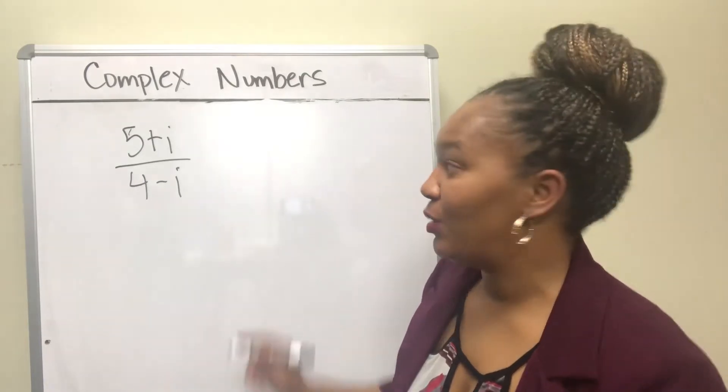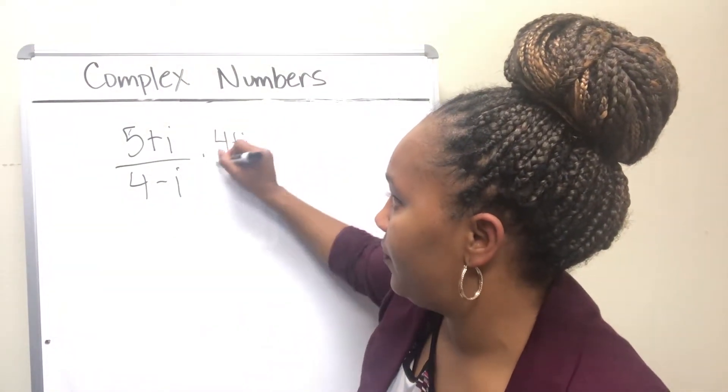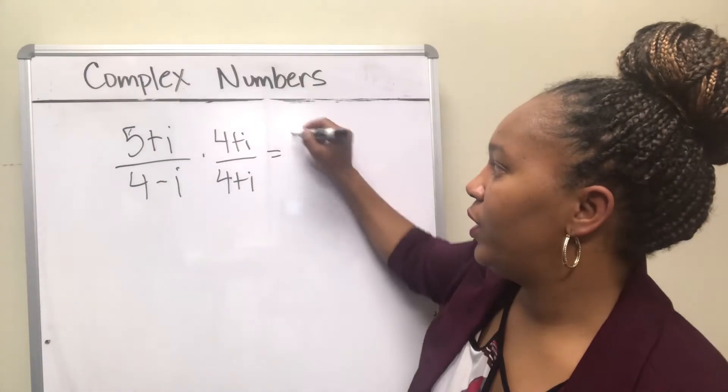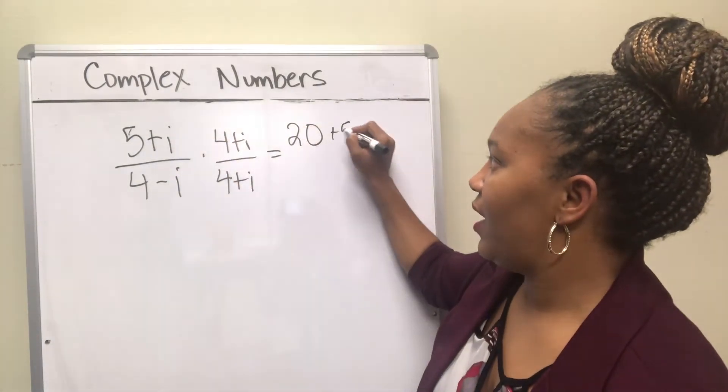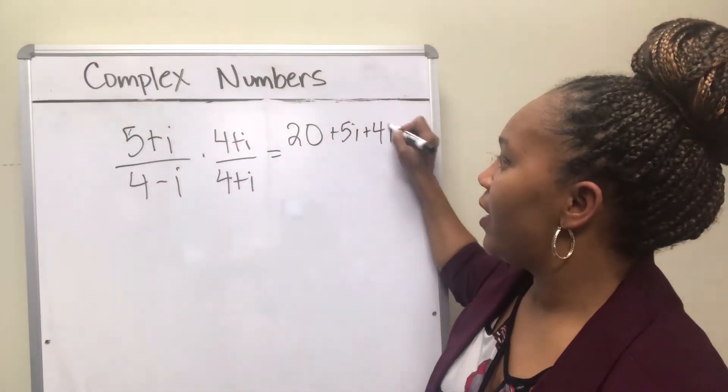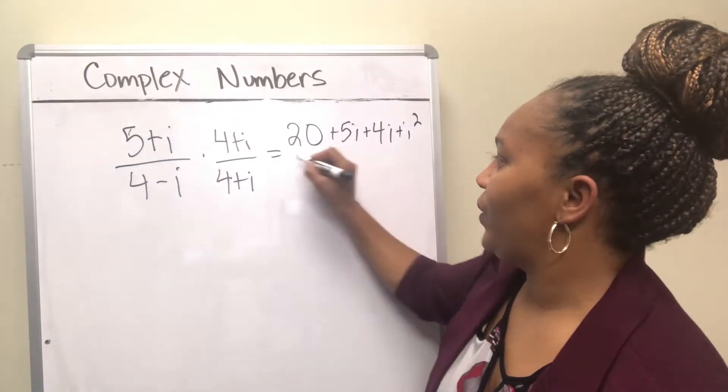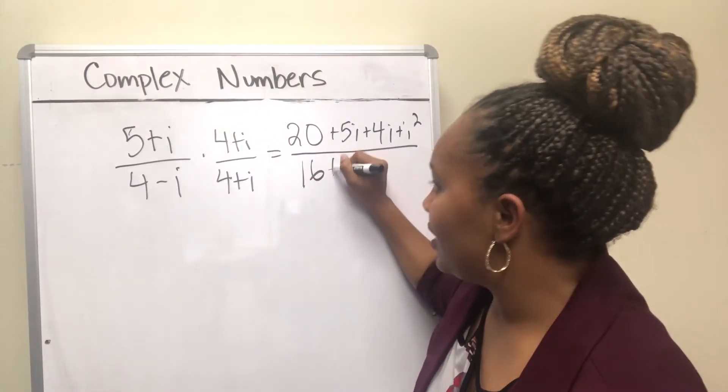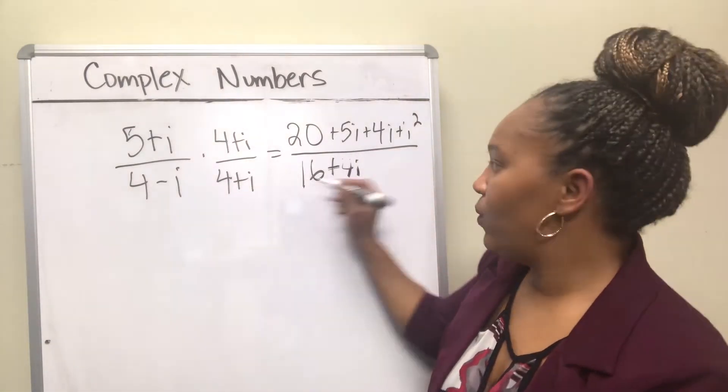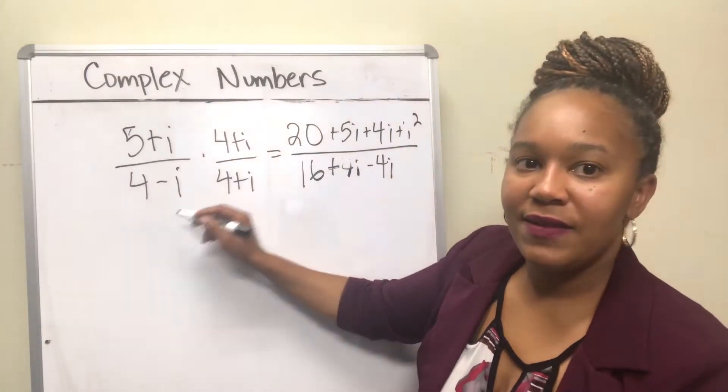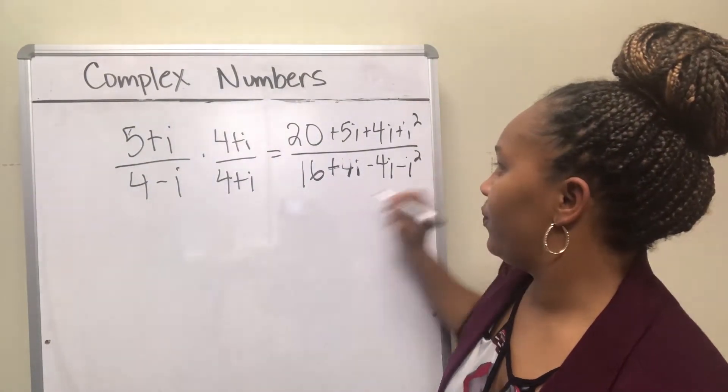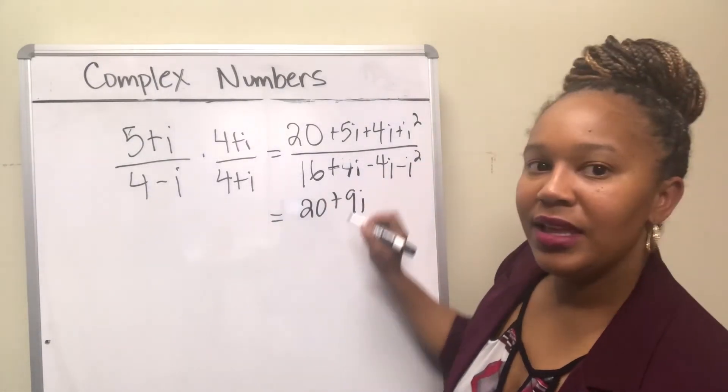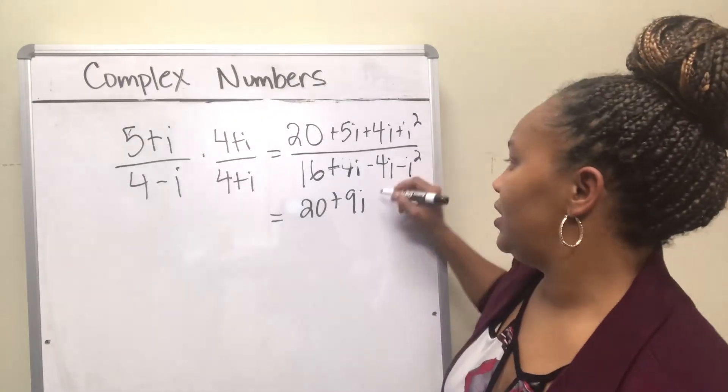Okay, so the first thing you should have did was multiply by the conjugate, which is 4 plus i. Then you should have multiplied this. So 5 times 4 is 20. 5 times i is 5i. i times 4 is 4i. And i times i is i squared. 4 times 4 is 16. 4 times i is 4i. Minus i times 4 is minus 4i. And negative i times i is negative i squared. 5i and 4i is 9i. And remember i squared is negative 1. So this is minus 1.